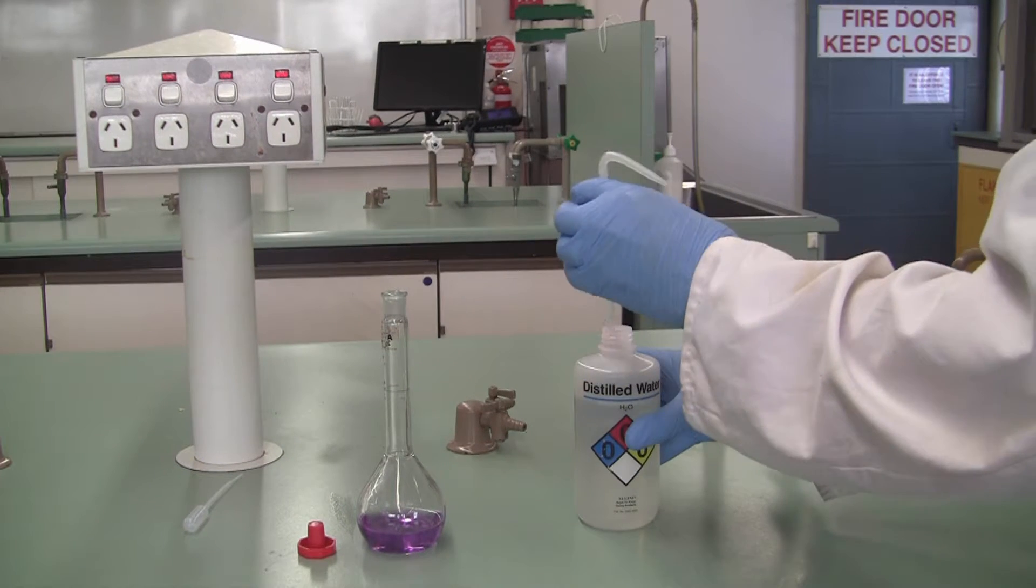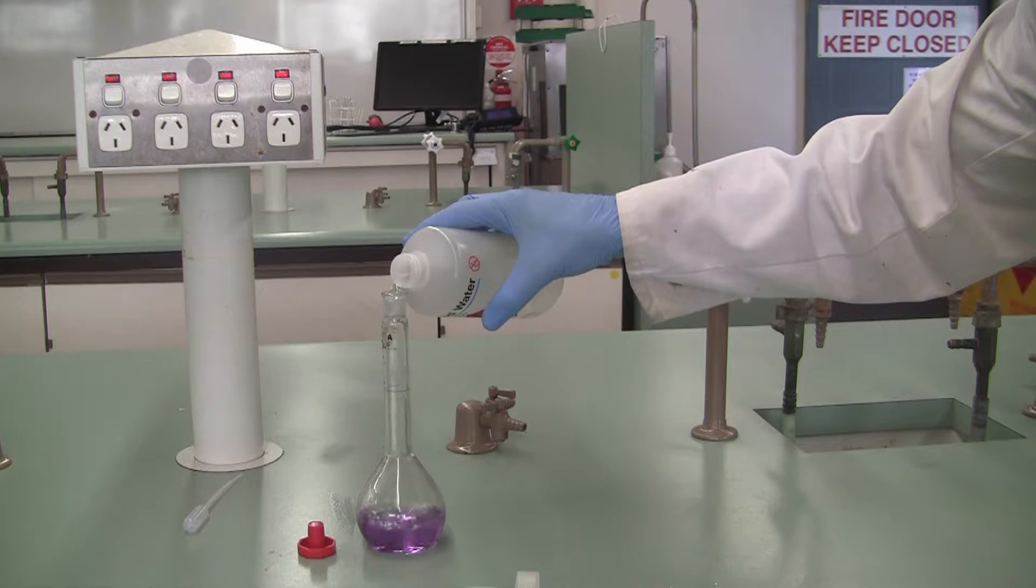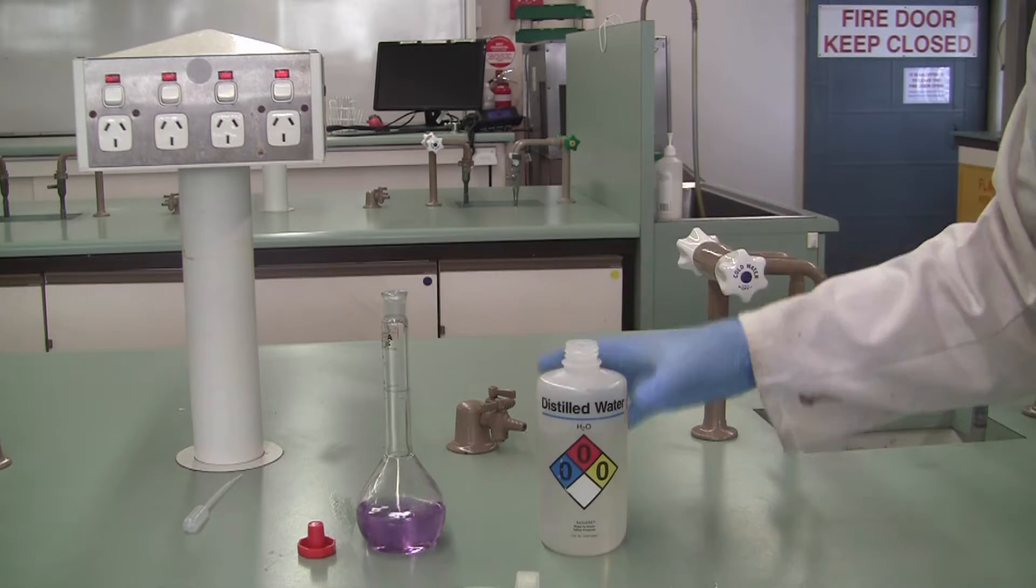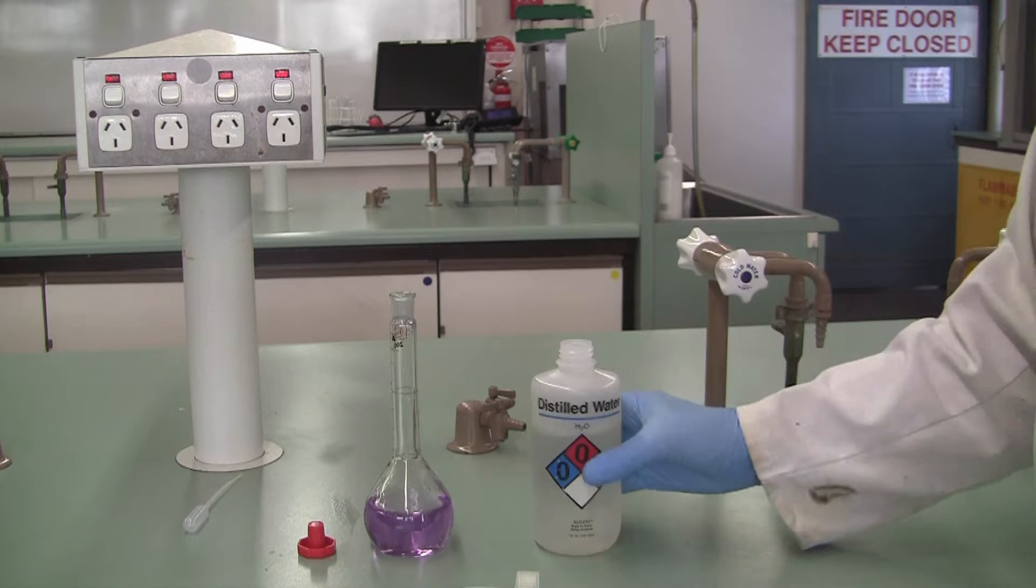So once you've got your sample in your standard flask, get your wash bottle, take the lid off and add 20 or 30 mil portions. As you add each portion, pick up your flask and give it a swirl to make sure you're mixing as you go.